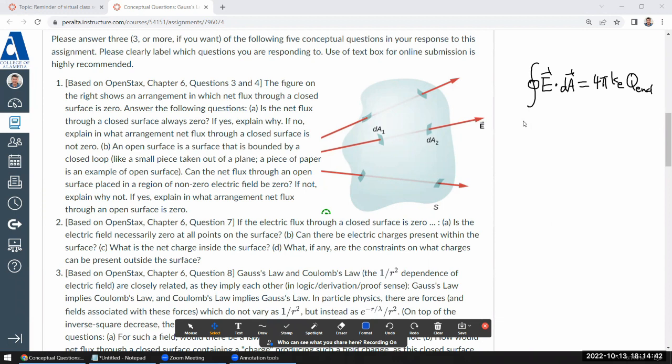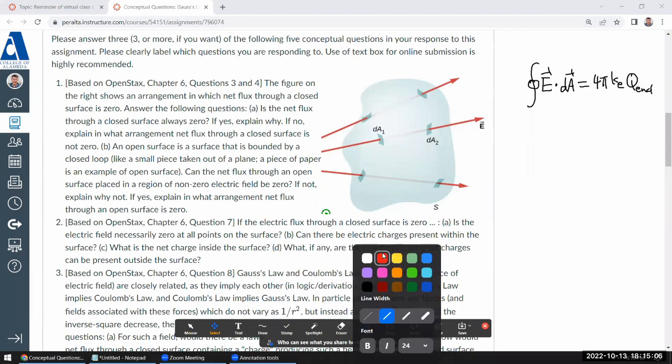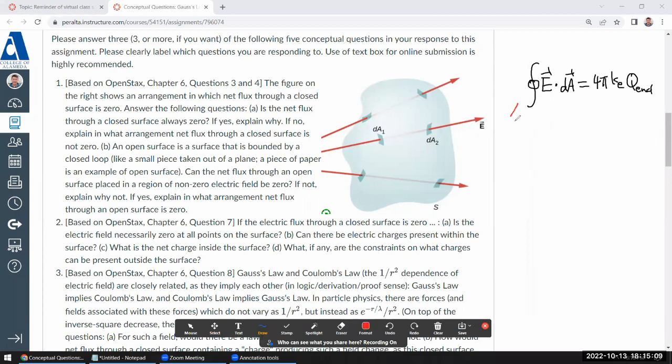So even if it doesn't seem intuitively true, this is like our axiom, it's our starting point where we say this is true and figure out the rest of the laws. So when you look at a question like question one, which says that this figure shows an arrangement where the net flux through the is zero, then where it says is the net flux through a closed surface always zero?